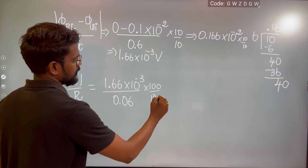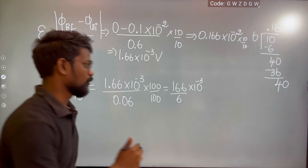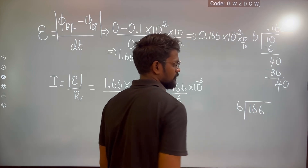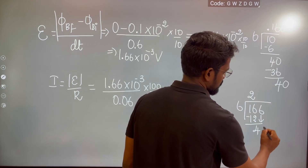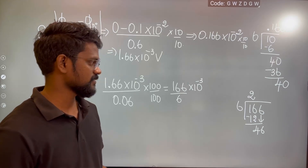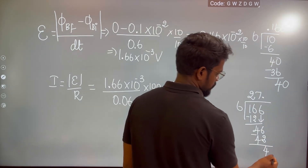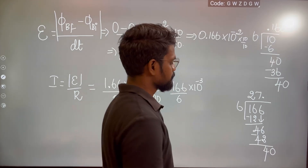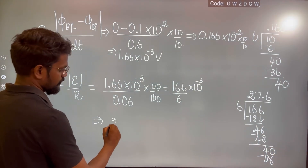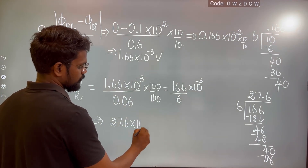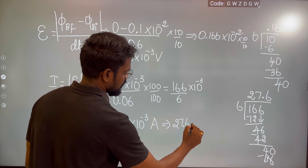This term becomes 166 divided by 6 into 10⁻³. Solving the division gives approximately 27.6 × 10⁻³, so the current is 27.6 milliamperes.